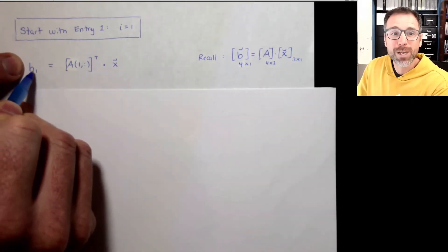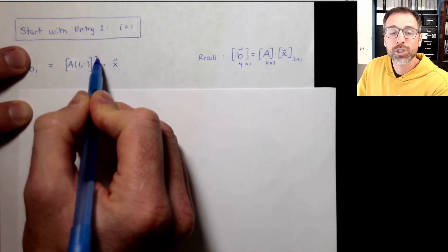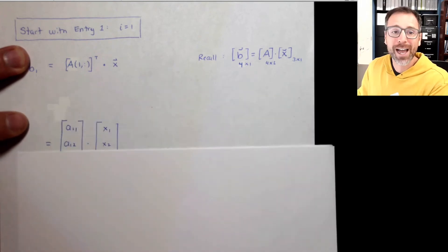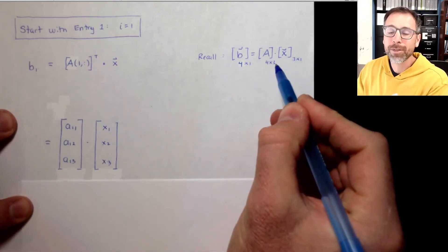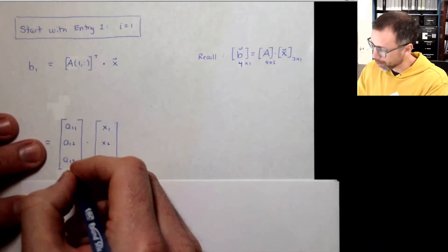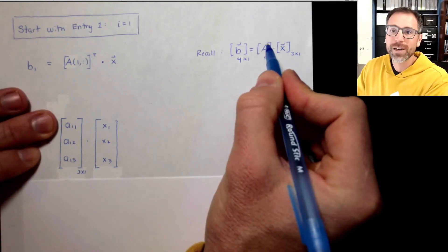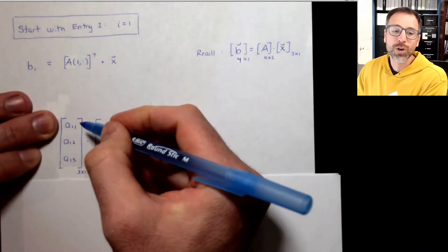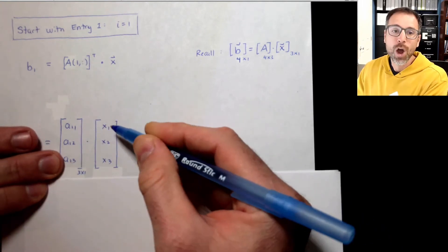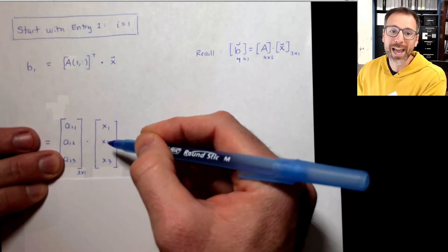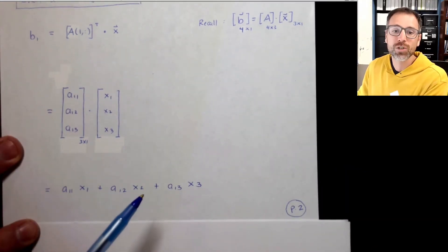For the first entry B_1, that's going to be the first row of A treated as a column vector, in other words transpose, dotted with the vector X. We know that the first row of A is 1 by 3, so the transpose is 3 by 1. This is going to be A_11, A_12, A_13. When we transpose it, it becomes A_11, A_12, A_13. When we dot it with the vector X, that's X_1, X_2, X_3, and we produce A_11 X_1 plus A_12 X_2 plus A_13 X_3.